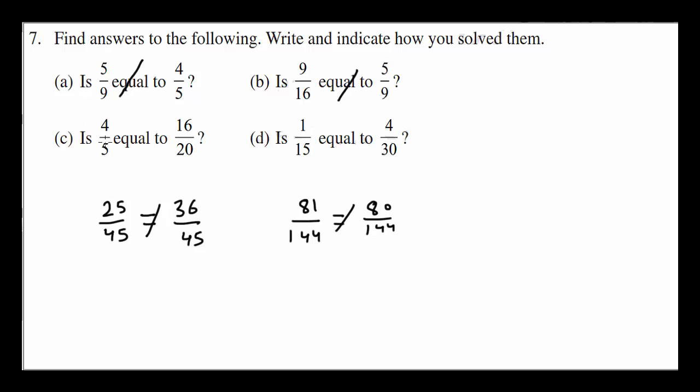Third is 4 over 5 equal to 16. Let's make it like. 4 over 5 is 16 over 20. Yes, they are equal. And D part, 1 over 15. Obviously 2, 1 blanket 2. It would give 2 over 30 which is not equal. That's how we have to do this.